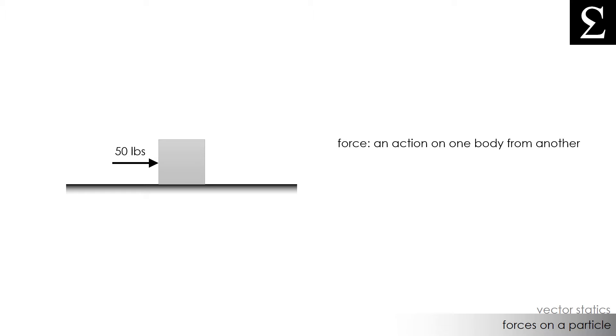The force here is represented by this arrow and there are several important characteristics that we want to take a look at. The first is that we have a point of application which is simply where the force is being exerted on the object, and in this case the force is being exerted on the left side of the box.